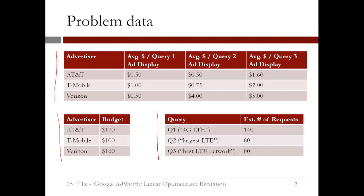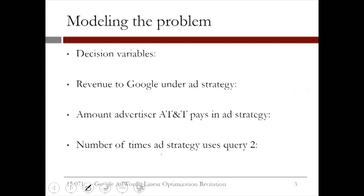Let's now think about how to model all of the pieces of our problem. First, how should we define our decision variables? Well, we should define them for each advertiser in each query. So for example, one of our decision variables will be XA1. XA1 is the number of times we will display AT&T's ad for query 1. Similarly, we can define XA2 and XA3, which are the numbers of times that we will display AT&T's ad for queries 2 and 3, respectively.